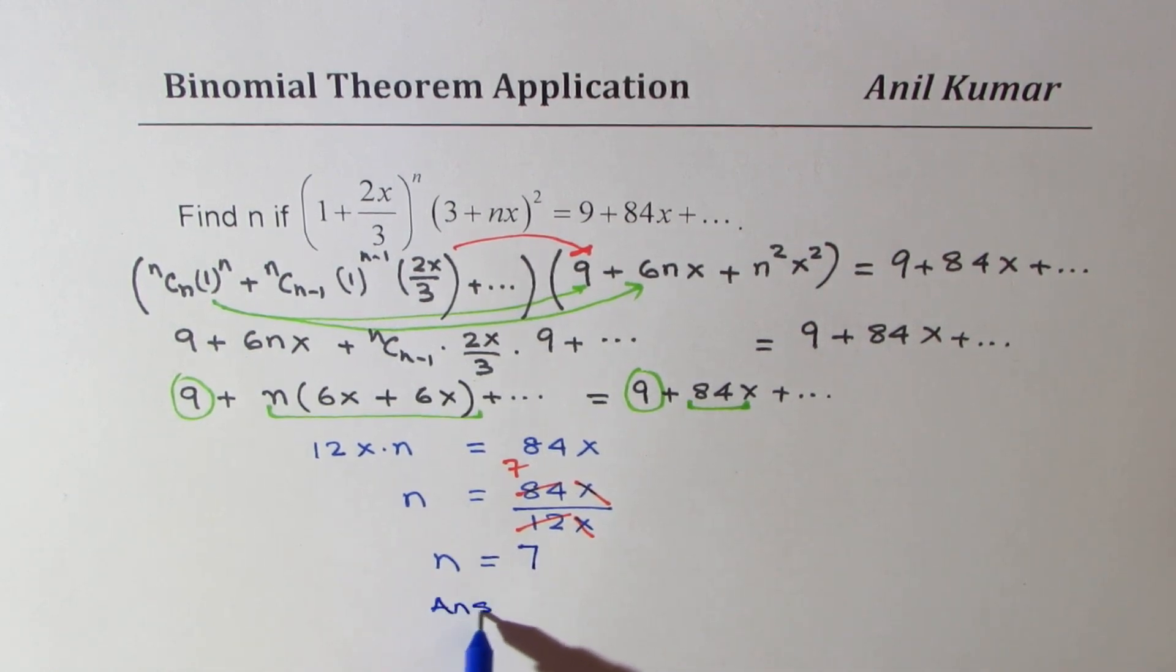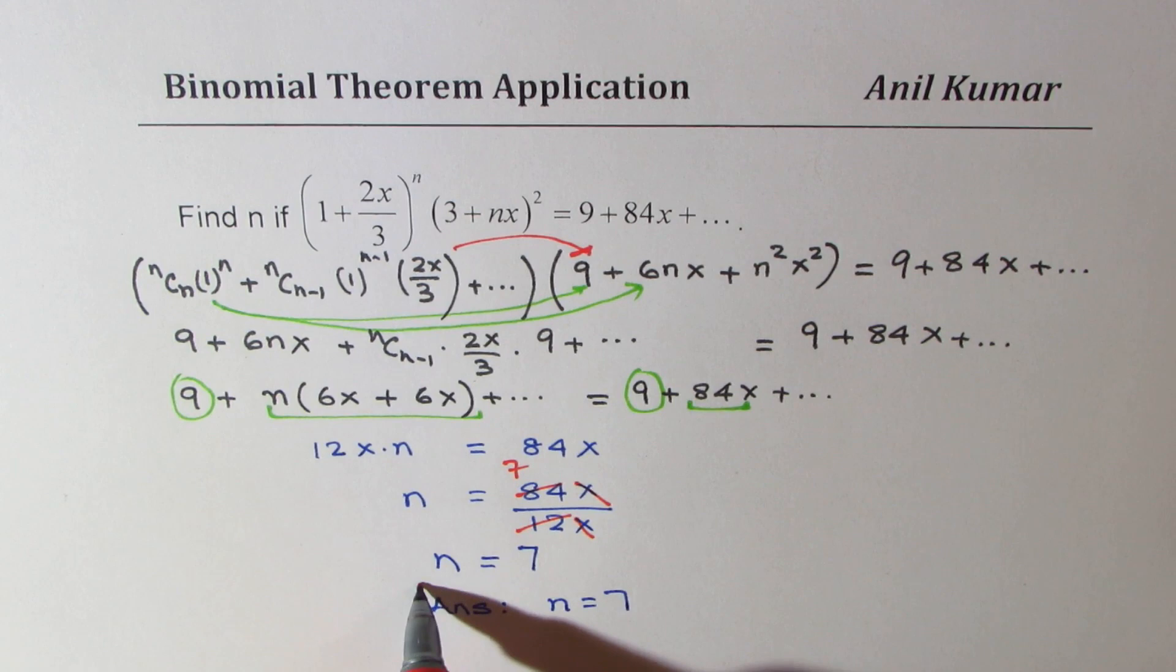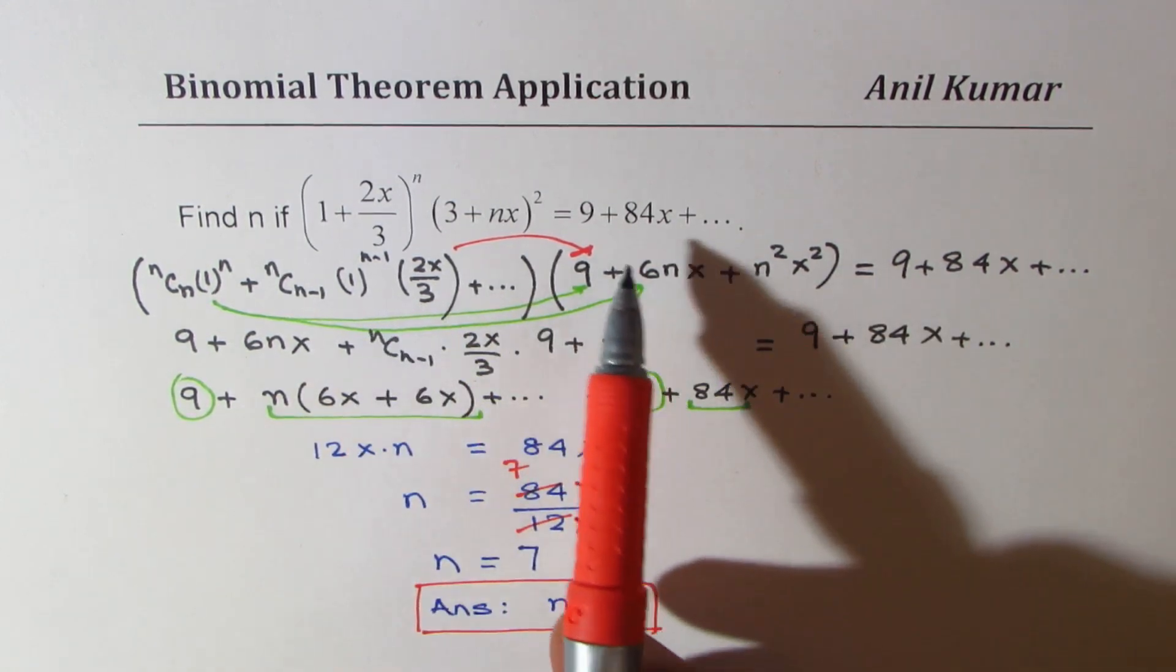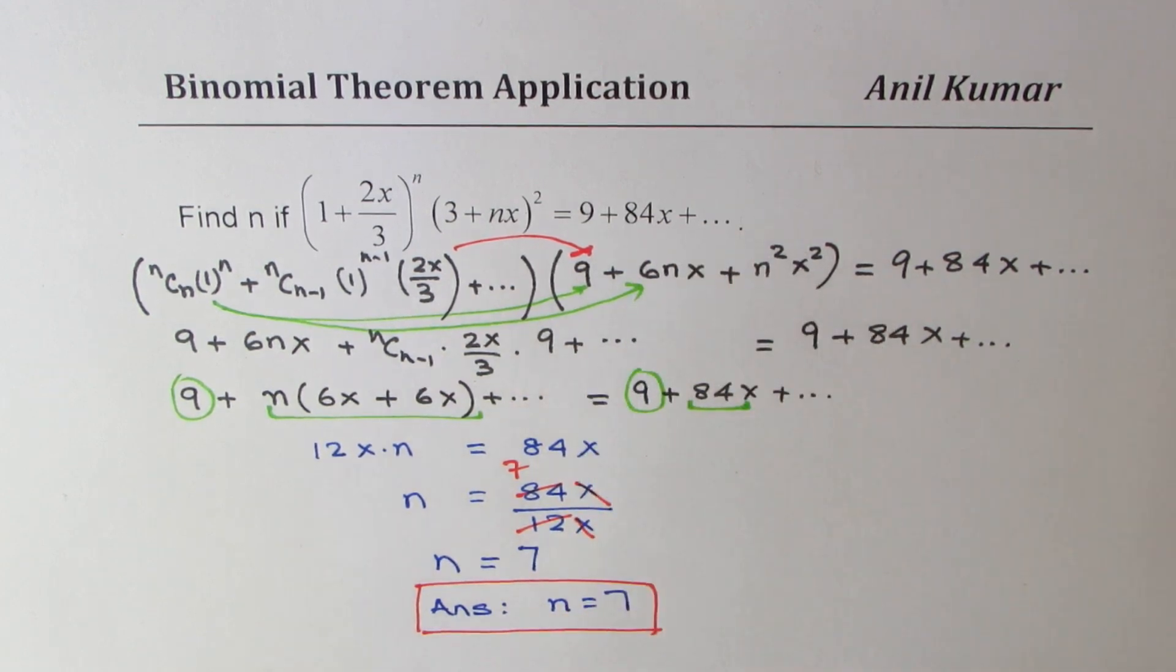So our answer is n equals 7. So I hope the steps are absolutely clear. If you have such questions, you only have to work for the terms where you really need to compare. That's the whole idea. So that way if you do, you take less time and get the perfect answer. I hope these steps are absolutely clear. Feel free to write your comments and share your views. If you like and subscribe to my videos, that'd be great. Thanks for watching and all the best.